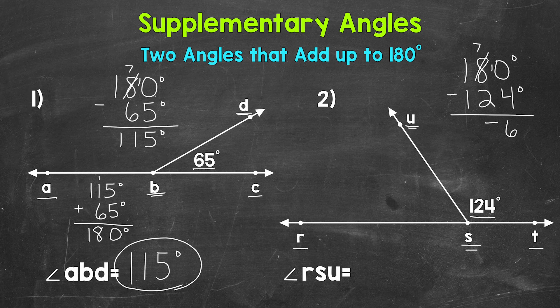7 minus 2 is 5. And then 1 minus 1 is 0. So we have 56 degrees. Angle RSU equals 56 degrees.